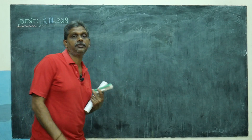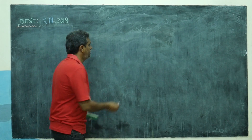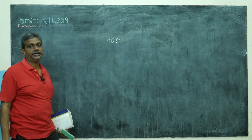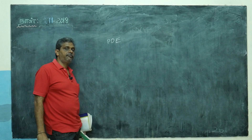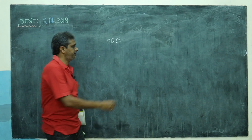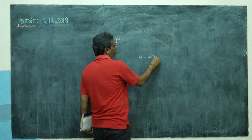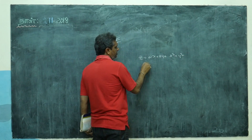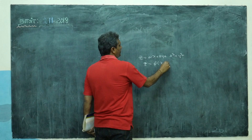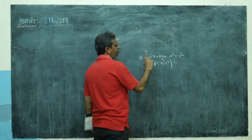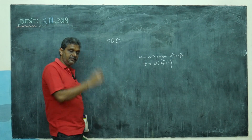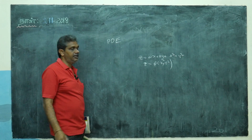Hi friends, this is your Dr. B.P. alias Dr. Bapuji Pillepu. In previous classes we discussed partial differential equations — forming the PDE. Type 1 is removing the arbitrary constant; for example, z = ax + by + x² + y², removing a and b. Then we removed functions, like z = φ(x² + y²). So removing constants and functions — that's what we dealt with. Now similarly, we also deal with functions of different types.